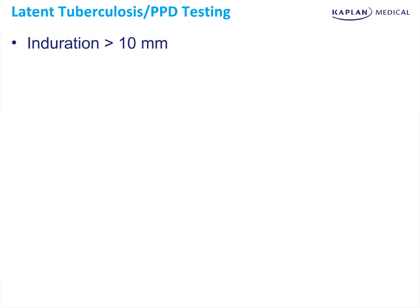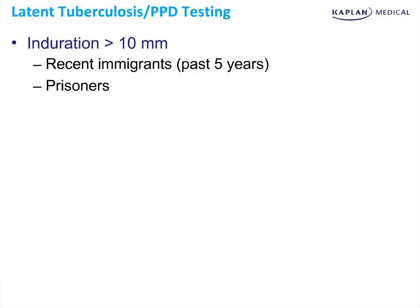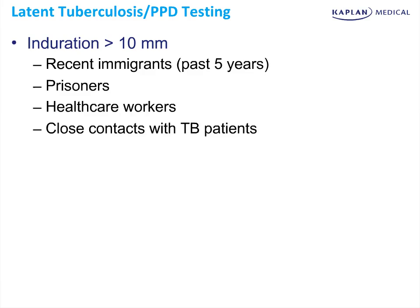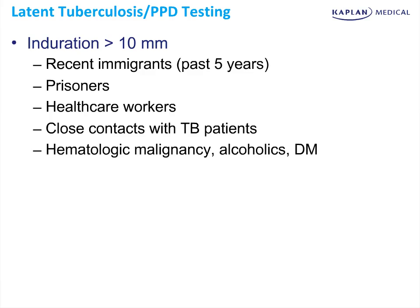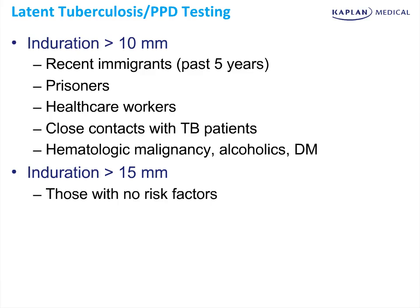Induration greater than 10 mm is necessary to call it positive if it's a recent immigrant within the past five years, a prisoner, healthcare worker, close contact with a TB patient, or patients with hematologic malignancy, alcoholism, or diabetes. In other patients — in particular healthy patients without risk factors — induration greater than 15 mm is necessary to call a positive PPD.